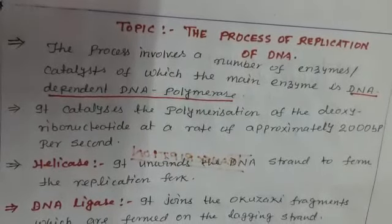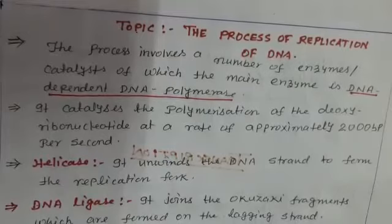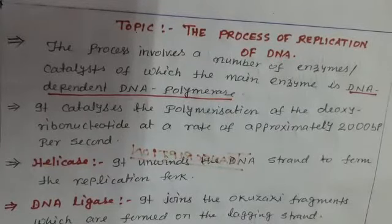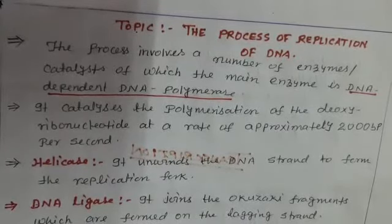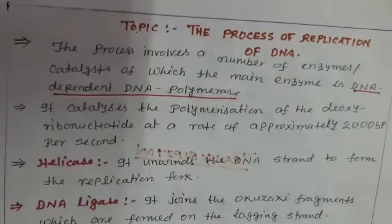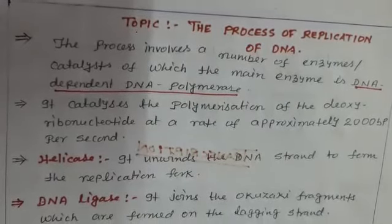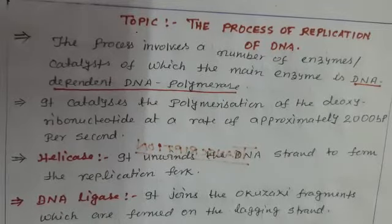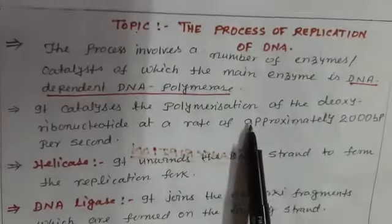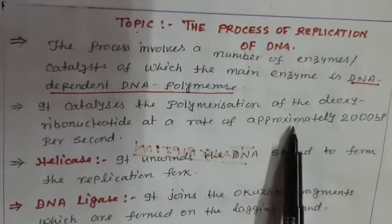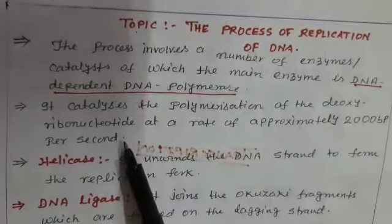Good morning students. Today we will learn the new chapter, that is the process of replication of DNA. The process involves a number of enzymes, of which the main enzyme is the DNA-dependent DNA polymerase. It catalyzes the polymerization of deoxyribonucleotides at a rate of approximately 2000 base pairs per second.